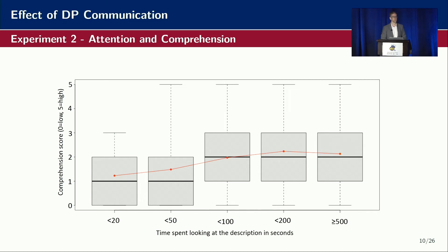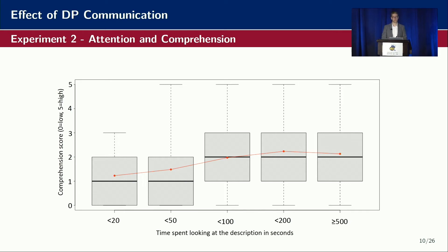One interesting finding from the second experiment: the y-axis shows the score out of five comprehension questions — one point per correct answer, five points maximum. The scores, shown as red dots, are very low overall. The x-axis shows time spent in seconds looking at the description of differential privacy. People who spent less than 20 seconds scored significantly lower than those who spent around three minutes. There is no increase afterwards, suggesting that participants who actually spent more time reading the description also understood differential privacy better.